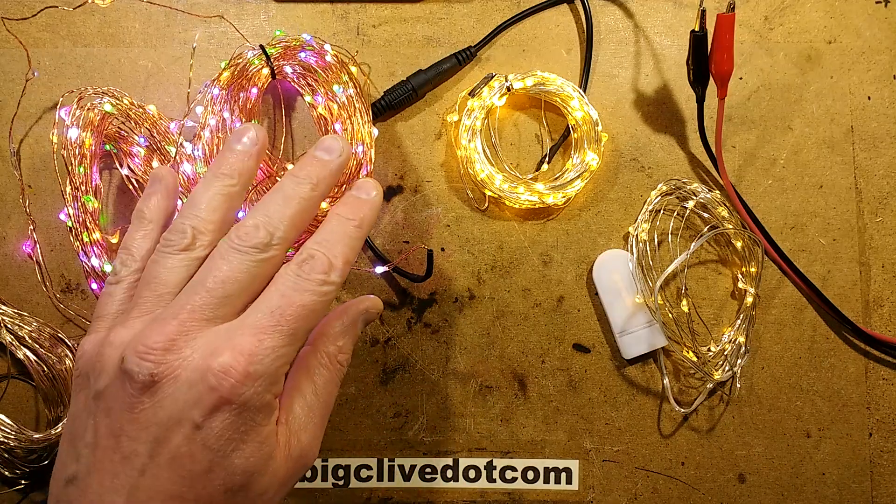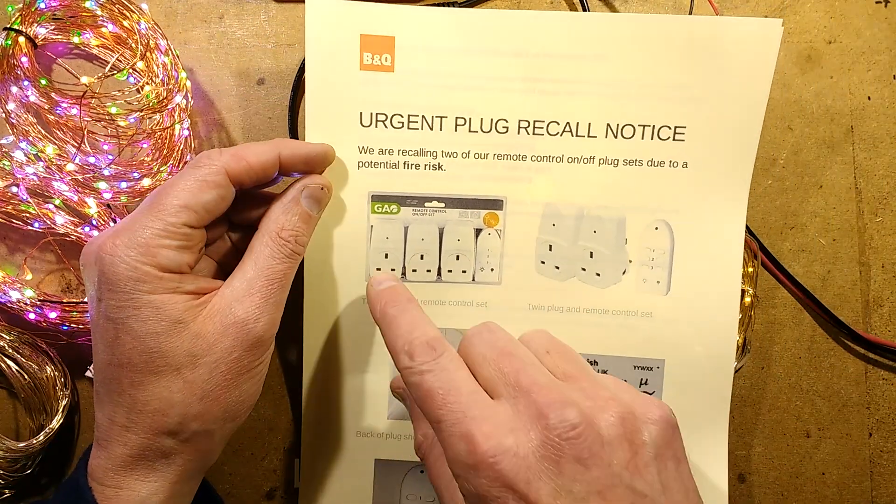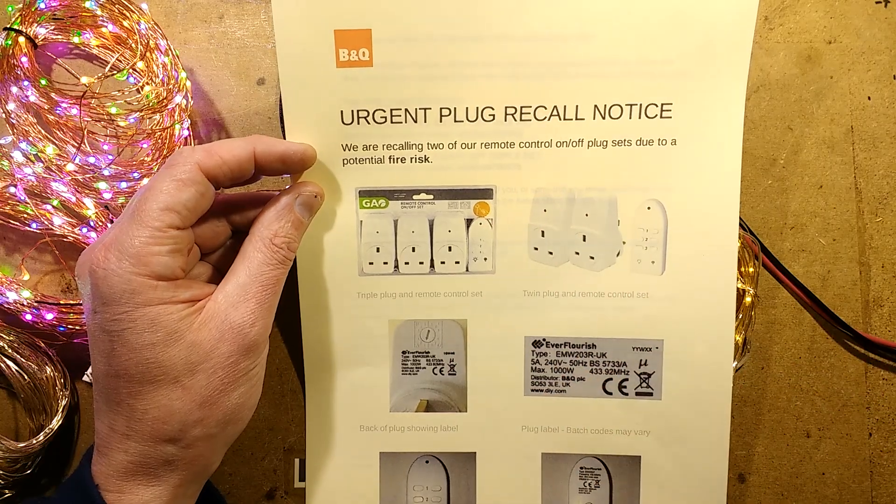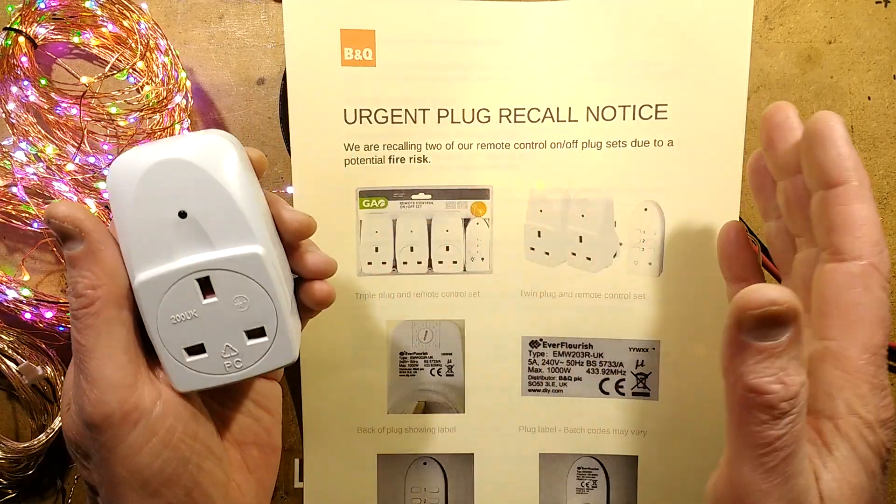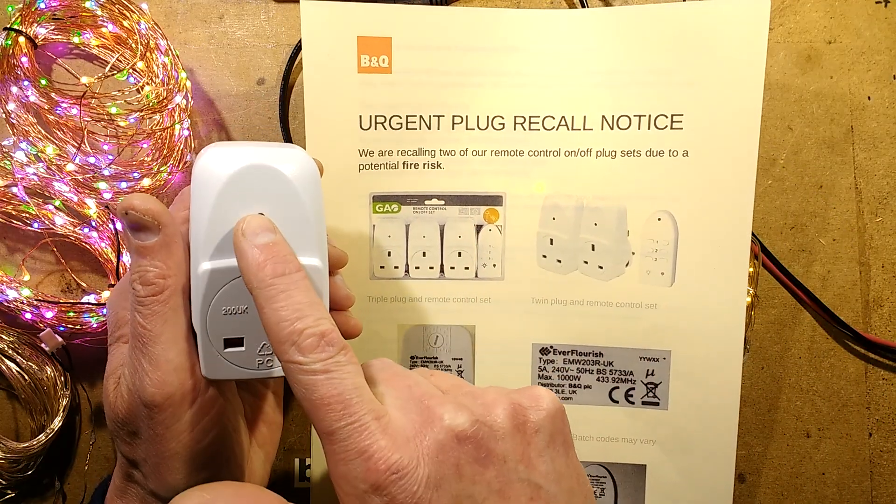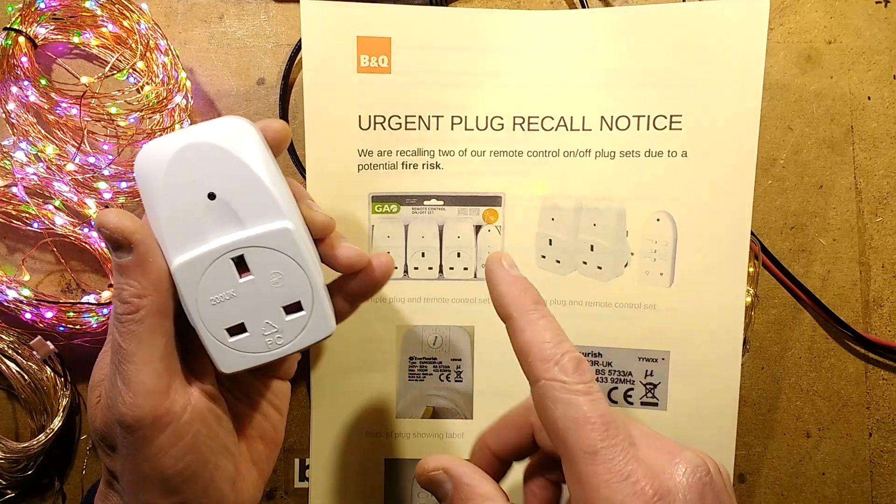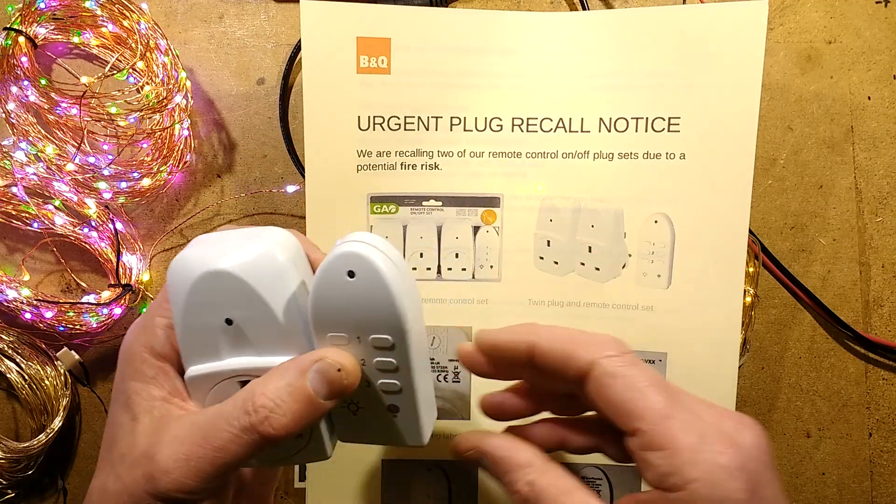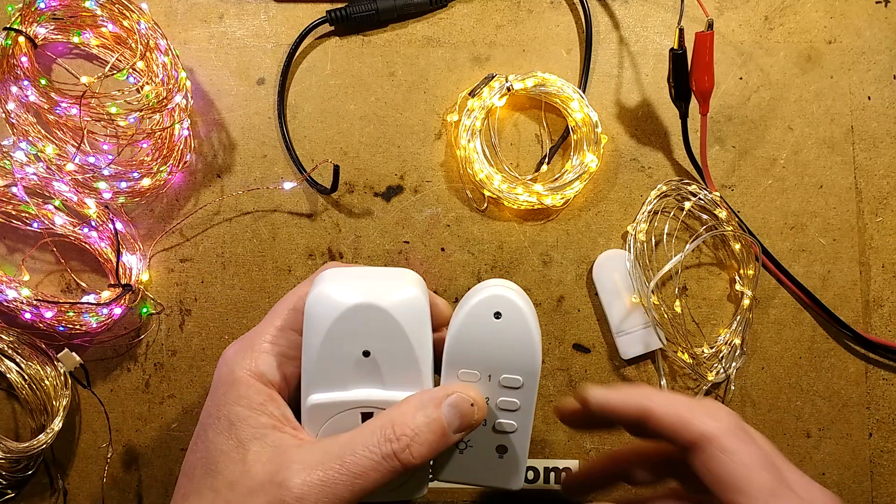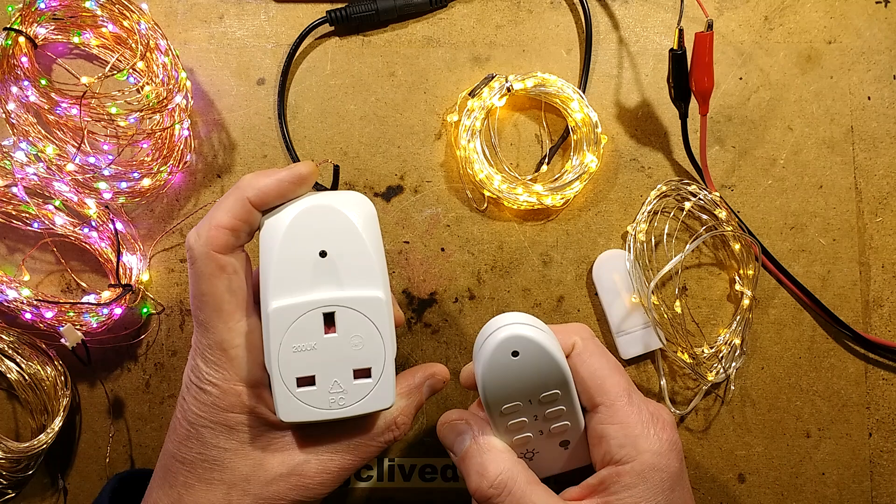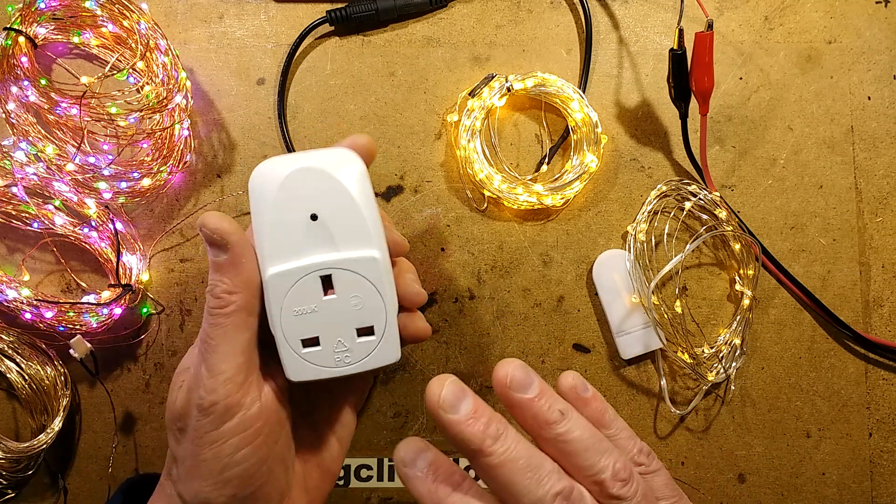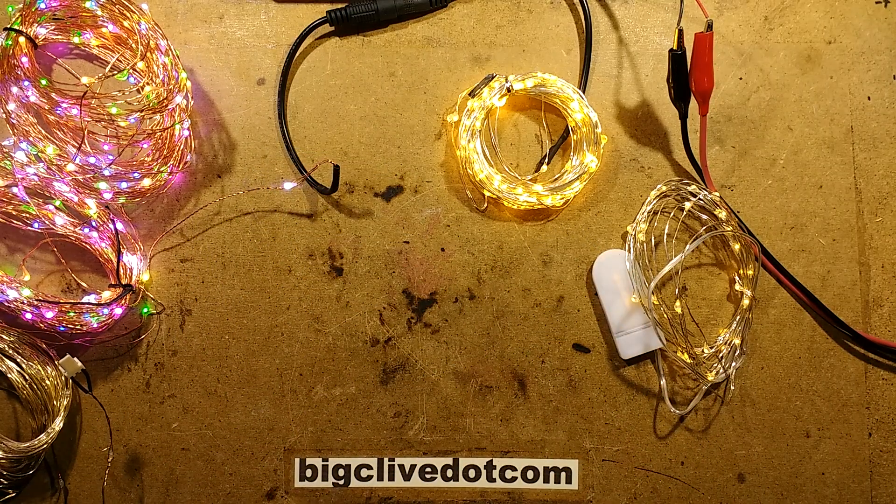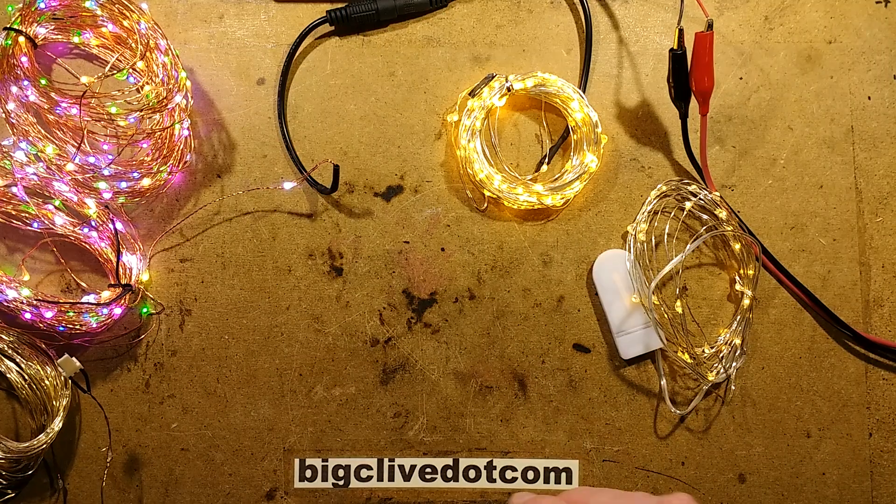This is 2017, coming up to Christmas. B&Q, one of our biggest DIY suppliers, has issued an urgent plug recall notice on these type of remote control plugs. I'm not sure if it's the generic brand because these are rebranded by lots of different companies. If you recognize these and you got them from B&Q, check their website DIY.com to see if yours are covered by that recall. Apparently some of them are getting very hot.